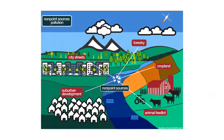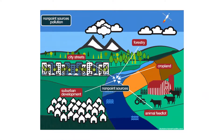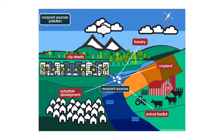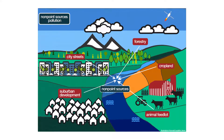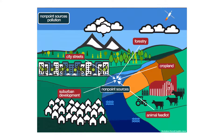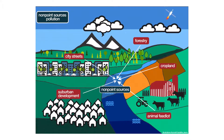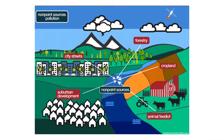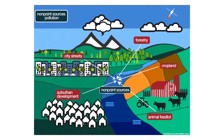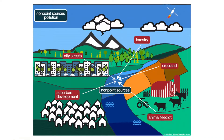Non-point source pollution is pollution that is picked up by rain and snowmelt as it flows over the ground. It comes from all over the watershed. Polluted runoff can occur anywhere rain falls. In our watershed, sediment is one of the main types of non-point source pollution.